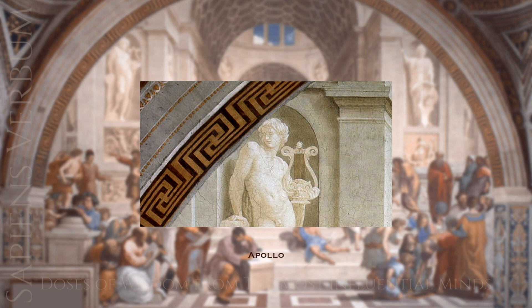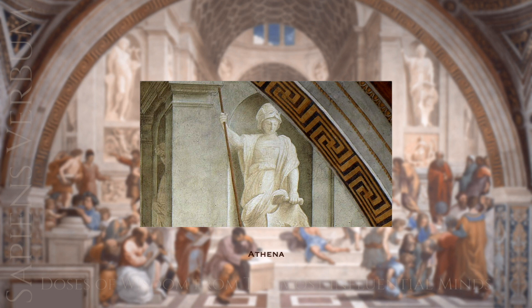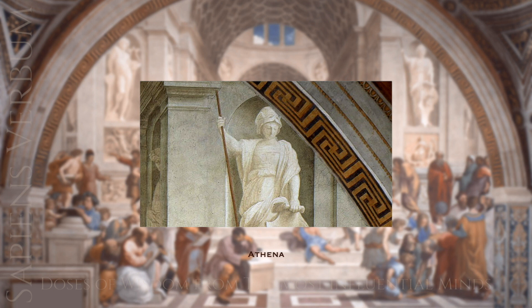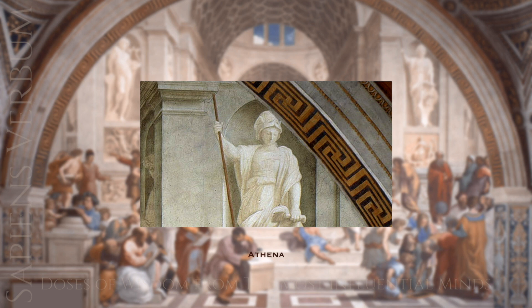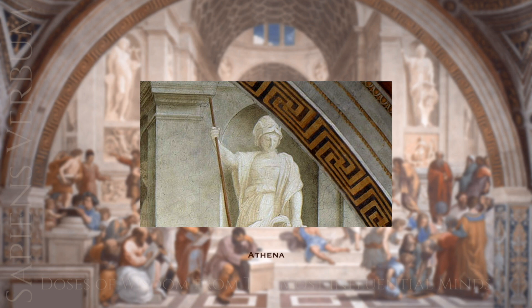Athena was the Greek goddess of wisdom, warfare, and crafts, often depicted wearing armor and carrying a shield and spear. In Roman mythology, she was known as Minerva and was associated with the owl as a symbol of wisdom. She was also known for her role in helping heroes such as Odysseus and Perseus on their quests.